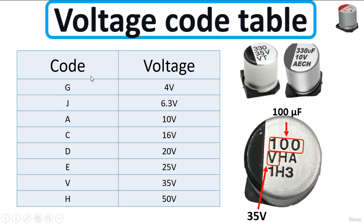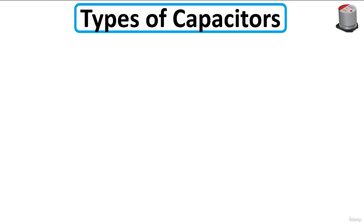This is the voltage code table: G means 4 volts, J means 6.3 volts, A means 10 volts, C means 16 volts, D means 20 volts, the next letter means 25 volts, V means 35 volts, and H means 50 volts.